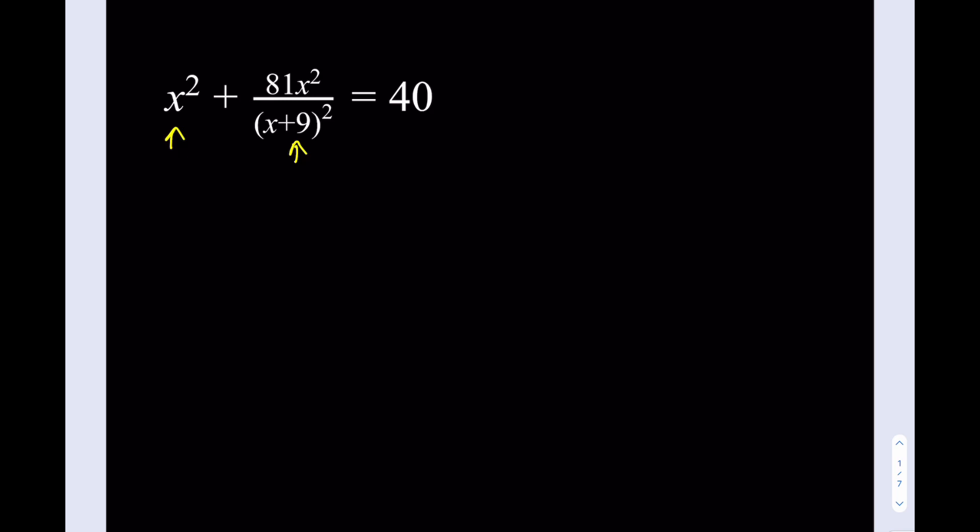So we're going to use a different approach, and my approach involves completing the square. Just notice that the expression I have here can be written as x squared plus 9x over x plus 9 squared equals 40. If you're trying to complete the square, you have to look at the terms you have. You could have something like a squared plus 2ab plus b squared as your perfect square, or you could have the minus version.